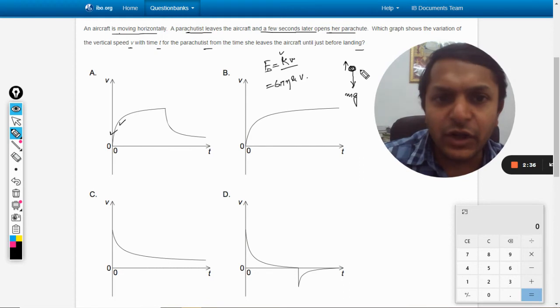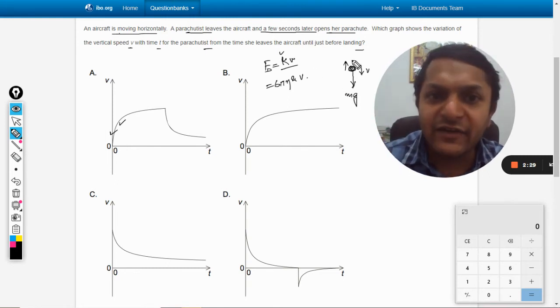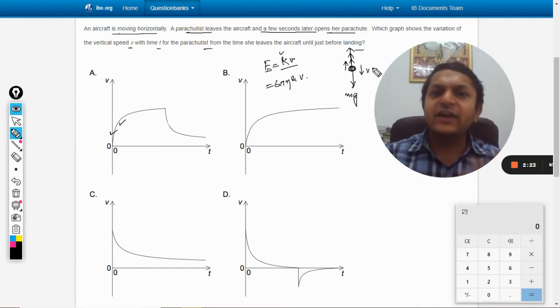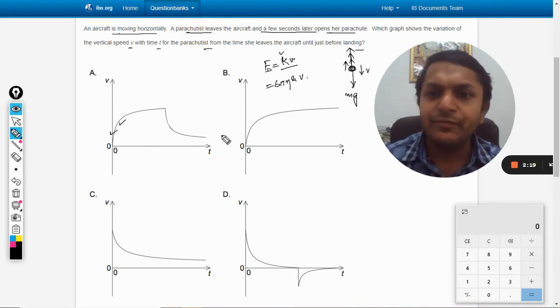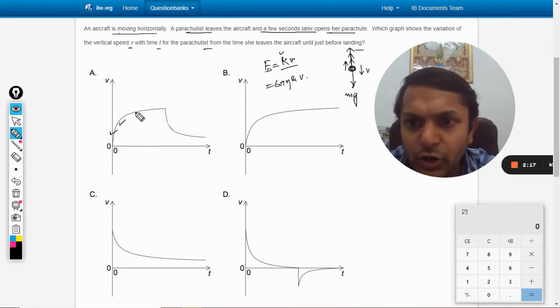Initially the velocity is not very high, so the drag force is not equal to weight. Gradually the velocity increases and the drag force increases. After some time it will become equal to weight, so it will become constant.